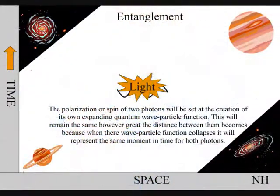We have entanglement because light moves through space, but not time, as a wave particle function. The polarization of two photons will be set at the creation of its own expanding quantum particle wave function.